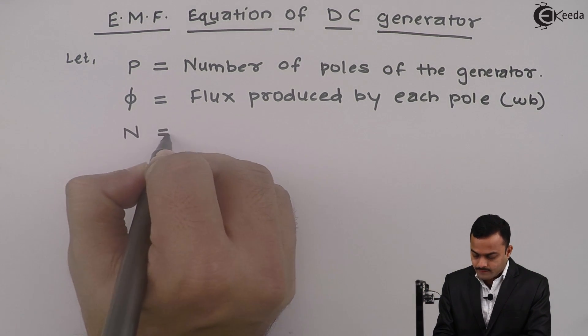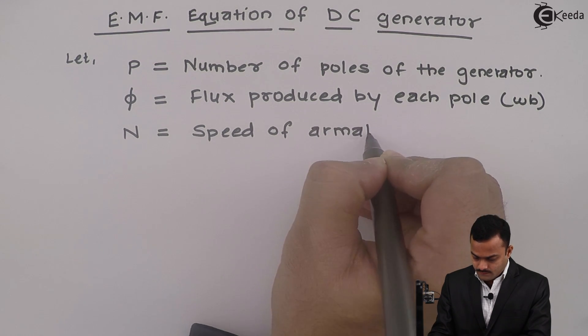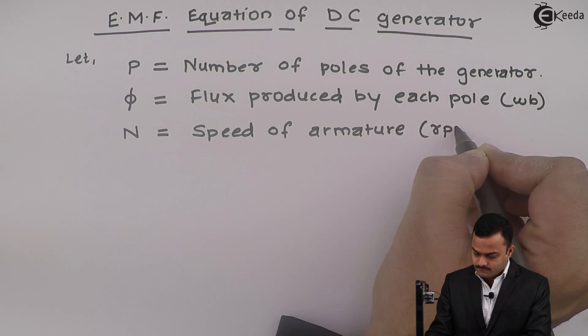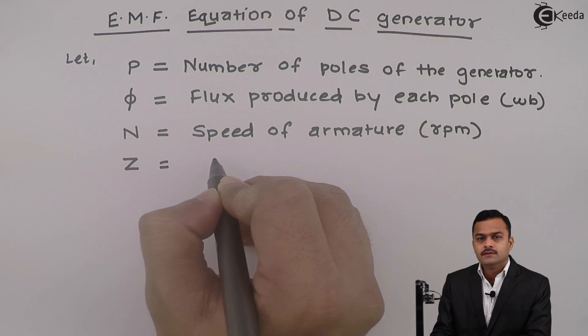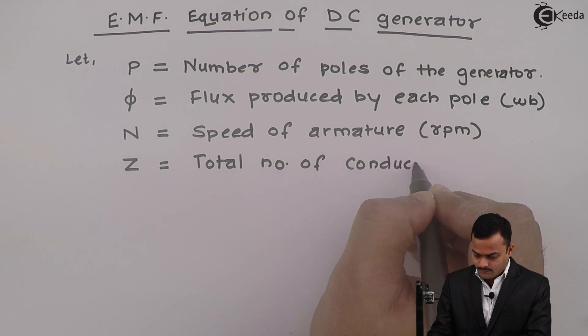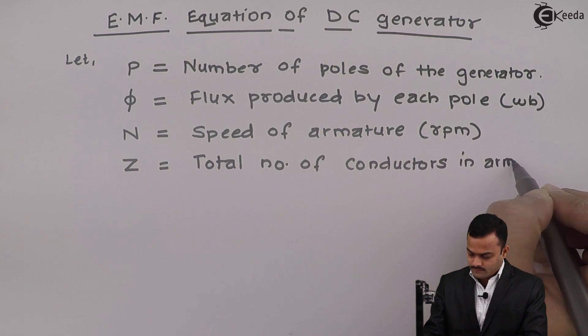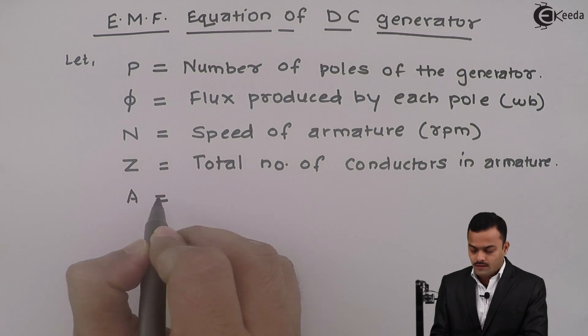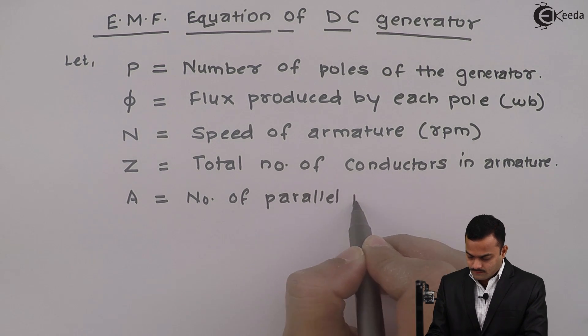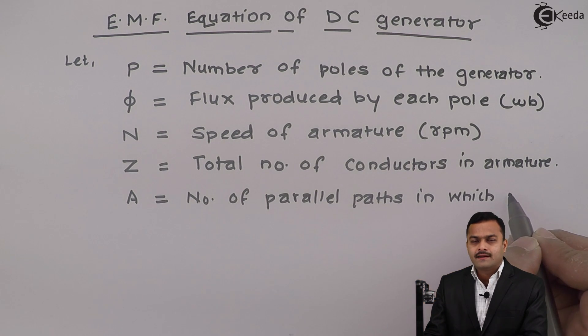And that is given in Weber. Then we have N, nothing but speed of the armature of the generator, and it is in revolution per minute, that is RPM. Z is total number of conductors which are fit in the slots of armature. A is nothing but number of parallel paths in which armature conductors are distributed.